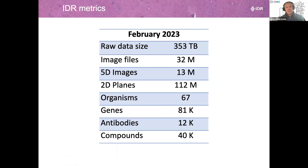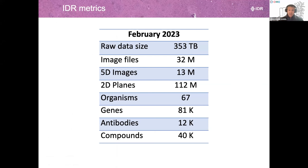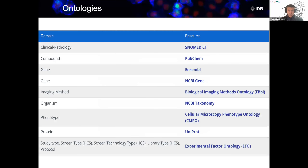To give a quick overview of numbers as they stand: since its creation around six years ago, there has been a steady increase in the size of data we are receiving. As you can see, there's a large number of genes, antibodies, compounds, and organisms. When we ingest the data, we use ontology.